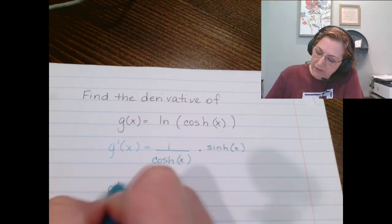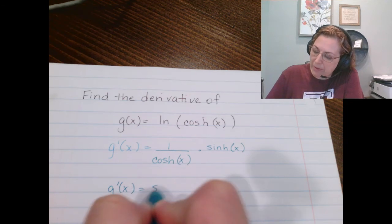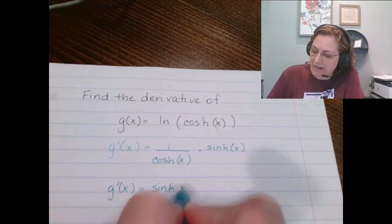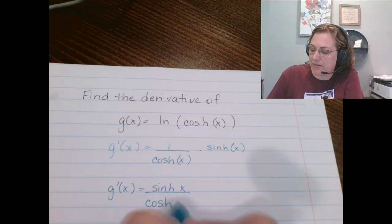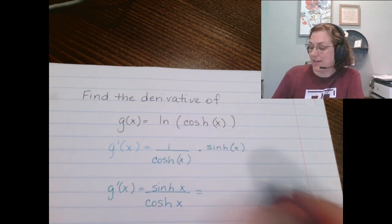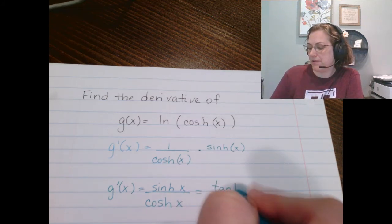So we end up with the hyperbolic sine of x over the hyperbolic cosine of x, which gives us the hyperbolic tangent of x.